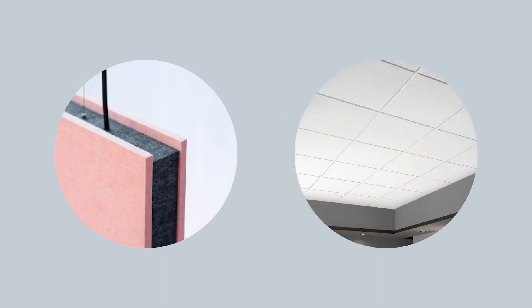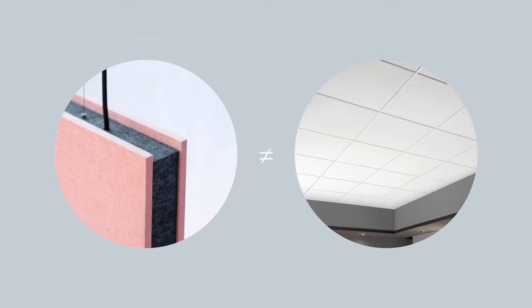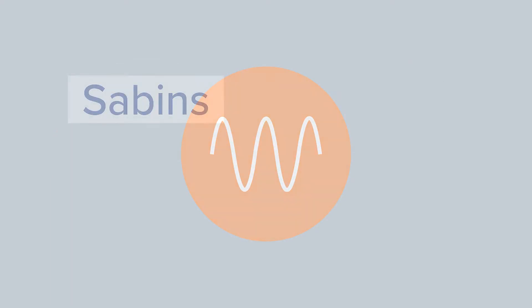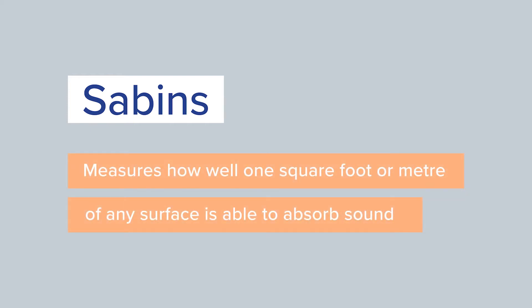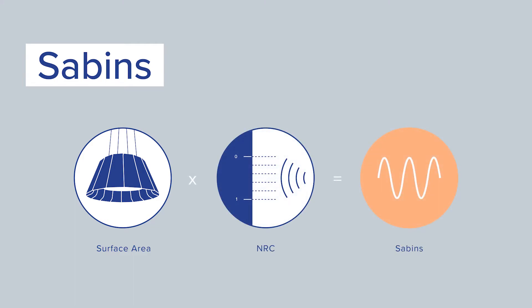However, the use of NRC has its limitations because two very different materials may have the same NRC value, but it doesn't mean they perform the same way. So at Luxbox, we use the Sabin value of a fixture. In effect, the Sabin value measures how well one square foot or metre of any surface is able to absorb sound. You calculate Sabins by multiplying the sound absorbing surface area of a product with its NRC.